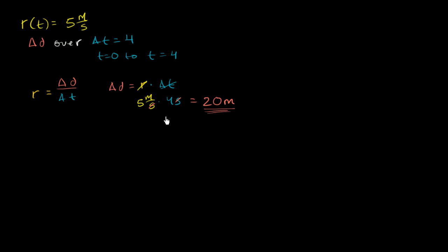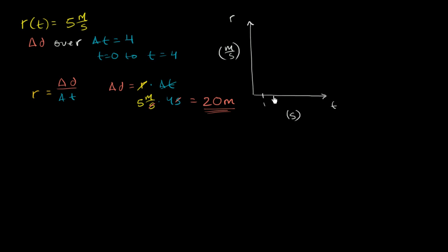Nothing new here, nothing too fancy. What I want to do now is connect this to the area under the rate function over this time period. So let's graph it. That's my rate axis — in meters per second — and this is my time axis in seconds. Our rate, at least in this example, is a constant five meters per second, so that is our r of t in this example.